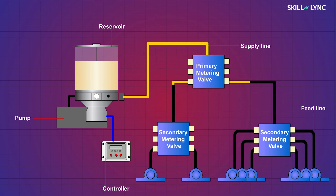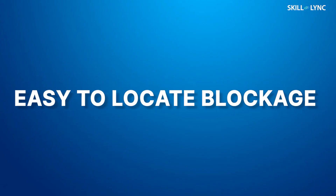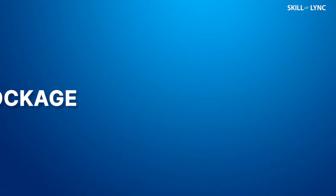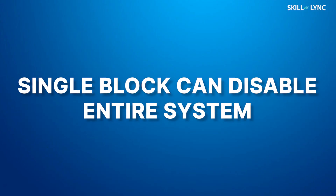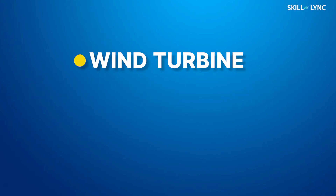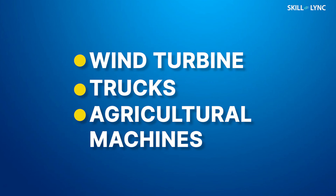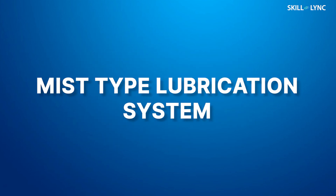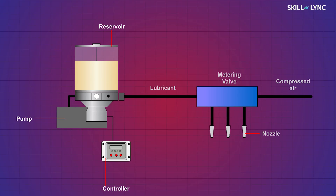The third type is the single line progressive system. In this type, the lubricant from the pump reaches the primary metering valve, from where it is distributed to the secondary metering valve, and it goes further. Because of this structure, it is easy to locate a blockage, but a single block can disable the whole system. This system is used in wind turbines, trucks, and agricultural machines.